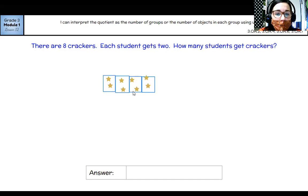And that makes two, four, six, eight. Okay. So that means that what we just did is eight divided by two equals four. Four students will get crackers.